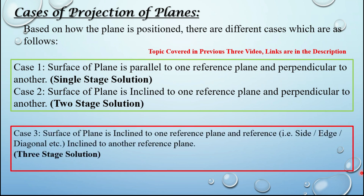Today we will discuss case number three, which is the actual exam question for engineering. Here the surface of a plane is inclined to one reference plane, and a reference — that is a side edge, diagonal, etc. — is inclined to another reference plane. This consists of a three-stage solution.